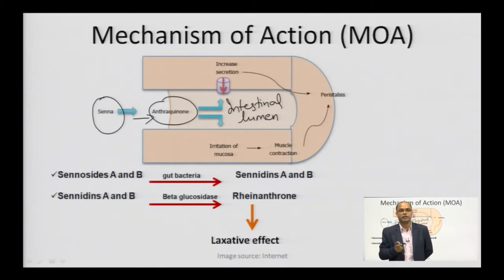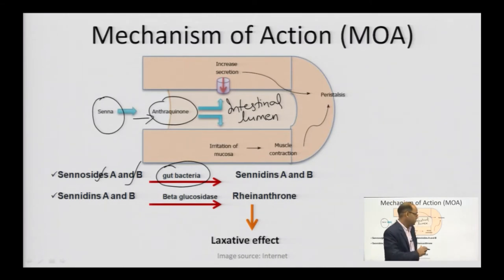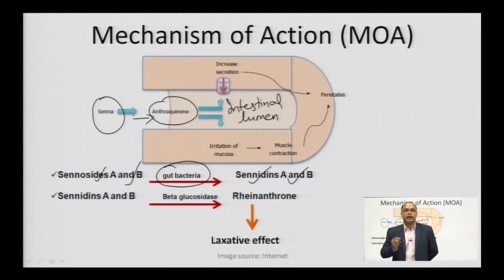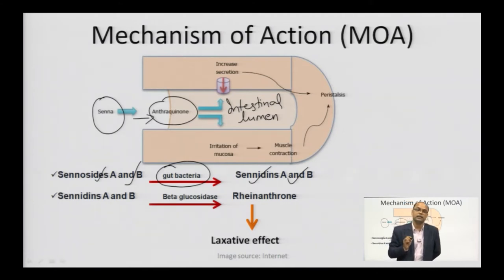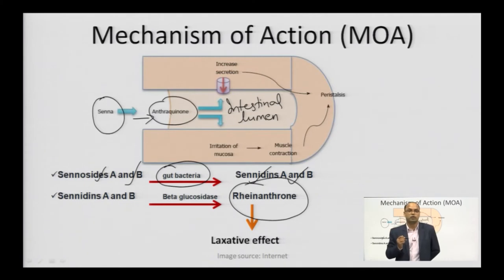Exactly what happens: Senoside A and Senoside B are digested by gut bacteria and converted into Sennidin A and Sennidin B. Sennidin A and Sennidin B are absorbed by your blood, and in the blood the enzyme beta-glucosidase acts on them and converts them into rhein-anthrone. Please remember that rhein-anthrone is the main chemical constituent which induces the laxative action on your intestine — it is responsible for the laxative action of senosides.